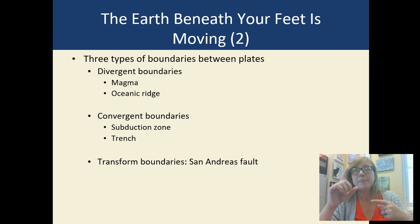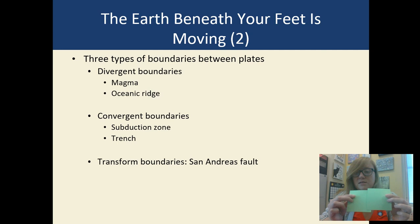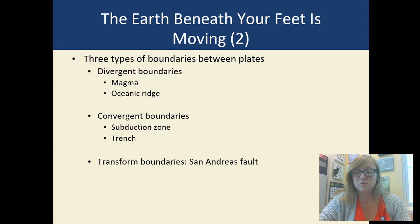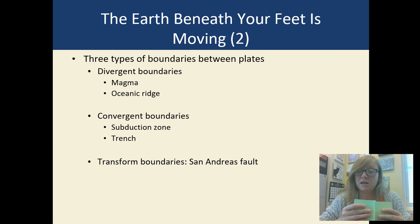Plates can be divergent — a divergent boundary is when plates are moving away from each other. That's like in the picture showing the mid-ocean ridge, where magma rises up between the plates and forms new oceanic crust. There isn't a spot on earth where there's nothing underneath; what's underneath is the mantle. That mantle can rise up between those plates and will form new oceanic crust. So magma comes up to the surface and forms new crust.